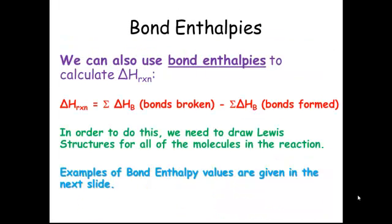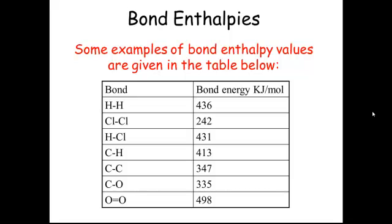Another way we didn't talk about last semester is using bond enthalpies — these are actually average bond enthalpies. It's a very similar process: we sum up all of the bond enthalpies for the bonds broken and subtract all of the bond enthalpies for the bonds formed. In order to do this, we need to draw the Lewis structures for all of the molecules in the reaction. On the next slide there's a table with example bond enthalpies. Remember, these are average bond enthalpies.